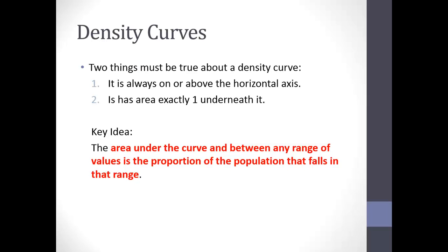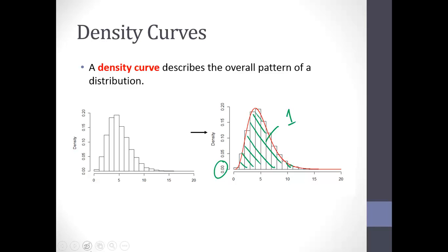Two properties: always positive, and it adds up to one underneath the curve. The key idea — which we'll look at in an example — is that the area under the curve between some range of values corresponds to the proportion of the population that falls in that range. So if I wanted to pick out between five and ten and shade in the area under the curve, that area corresponds to the proportion of people in my population between five and ten. Since it adds up to one, we can think of that as a percentage.